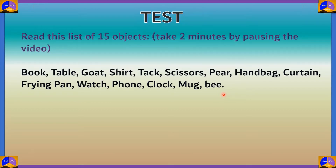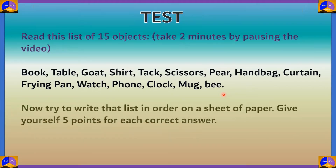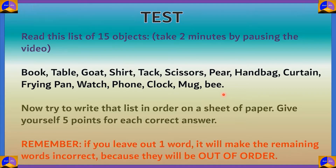I hope you've memorized it. Now try to write that list without looking at the video on a sheet of paper. You can give five points for each correct answer. Remember that if you leave one of the words out of order, it will make the remaining words incorrect. For example, if you started with book, table, goat, and you forgot shirt and instead wrote tack, the rest of the sequence will be incorrect because it's out of order. You have to remember everything in sequence.